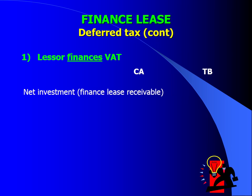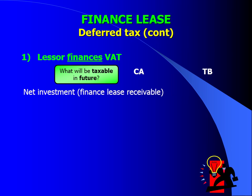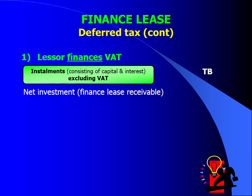That amount was calculated as the gross investment less the unearned finance income. Now, to identify how to calculate the tax base, I have to ask myself what will be taxable in the future. For a finance lease, SARS will tax the installment that will consist of capital and interest, excluding VATs. Why excluding VATs?